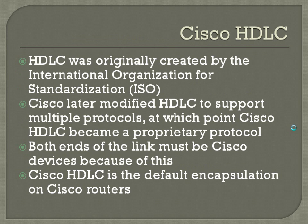Cisco HDLC was originally created by the International Organization for Standards, the ISO. Cisco later modified HDLC to support multiple protocols, and at that point it became a proprietary protocol. Both ends of the link must be Cisco devices to use Cisco HDLC. Importantly, Cisco HDLC is the default encapsulation on Cisco routers right out of the box. If you need to set it to PPP, you'll have to configure that, but if you're doing HDLC, that should be the standard as they come.